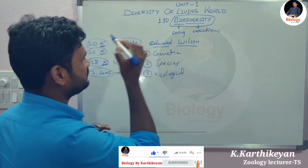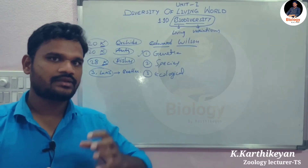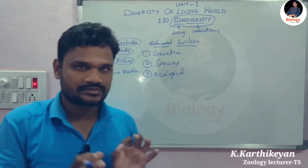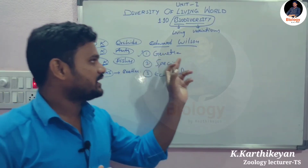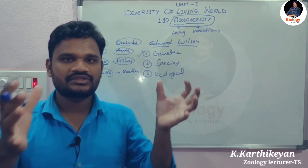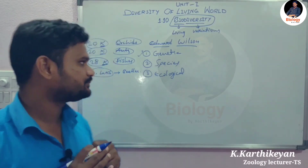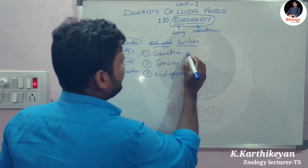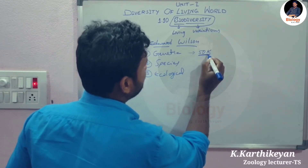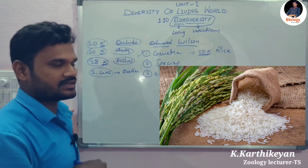Genetic biodiversity means the variations present in living organisms at the genetic level, or in their genes. For example, in India there are 50,000 varieties of rice grains, showing that within a single species, there are many genetic variations.